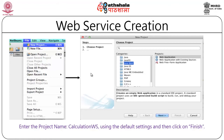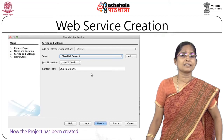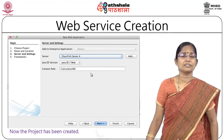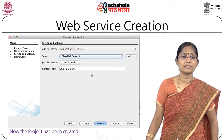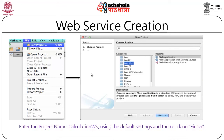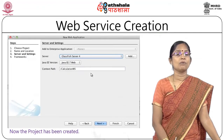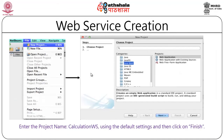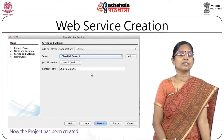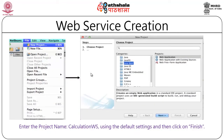Click Next and then choose the server. We have chosen GlassFish Server 4 and the Java EE 7 version. The project name is given as CalculationWS, where WS stands for web service. Click Finish to complete the project creation.